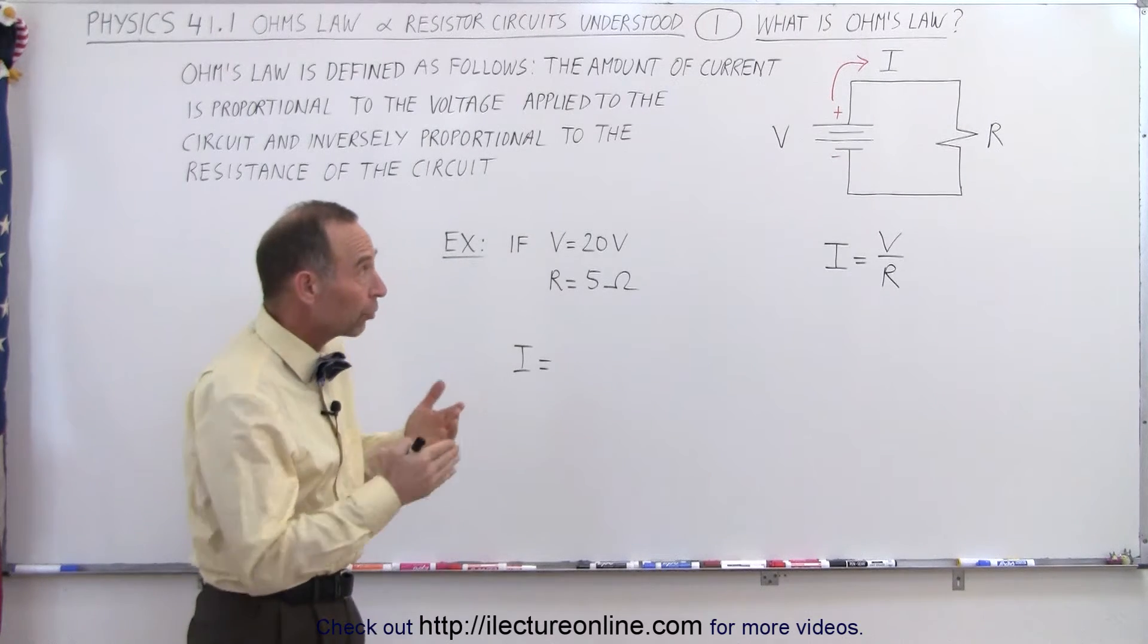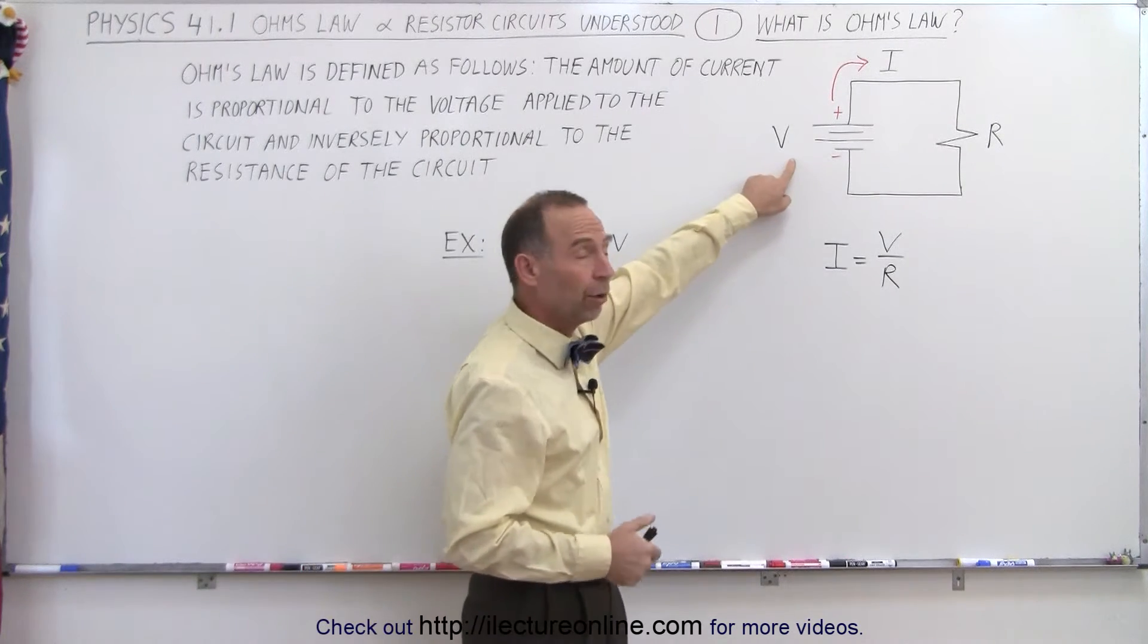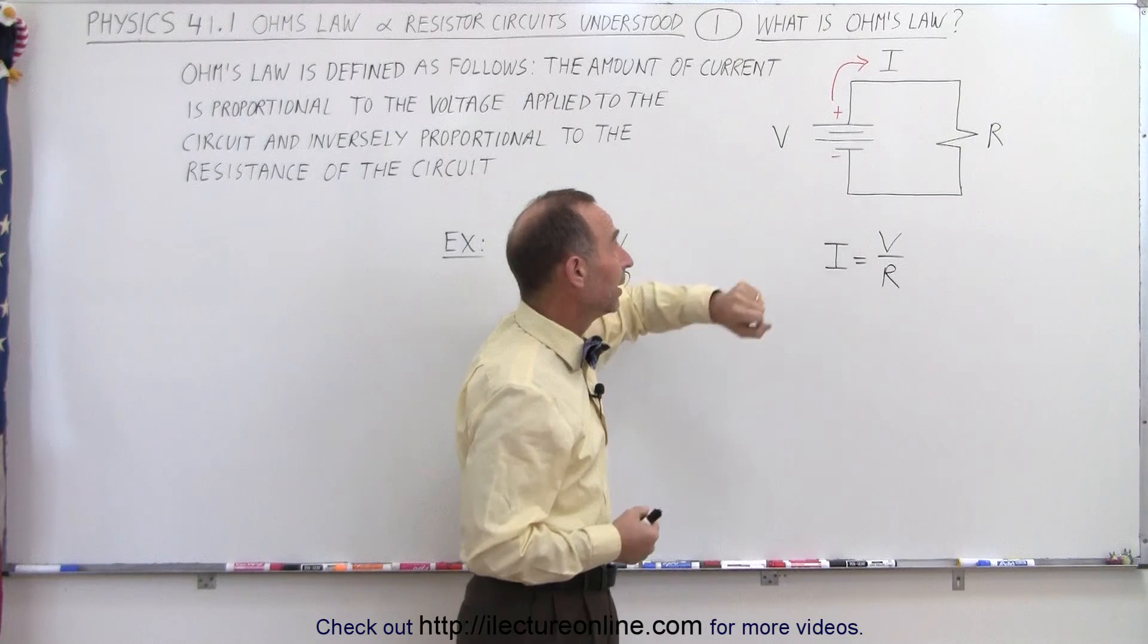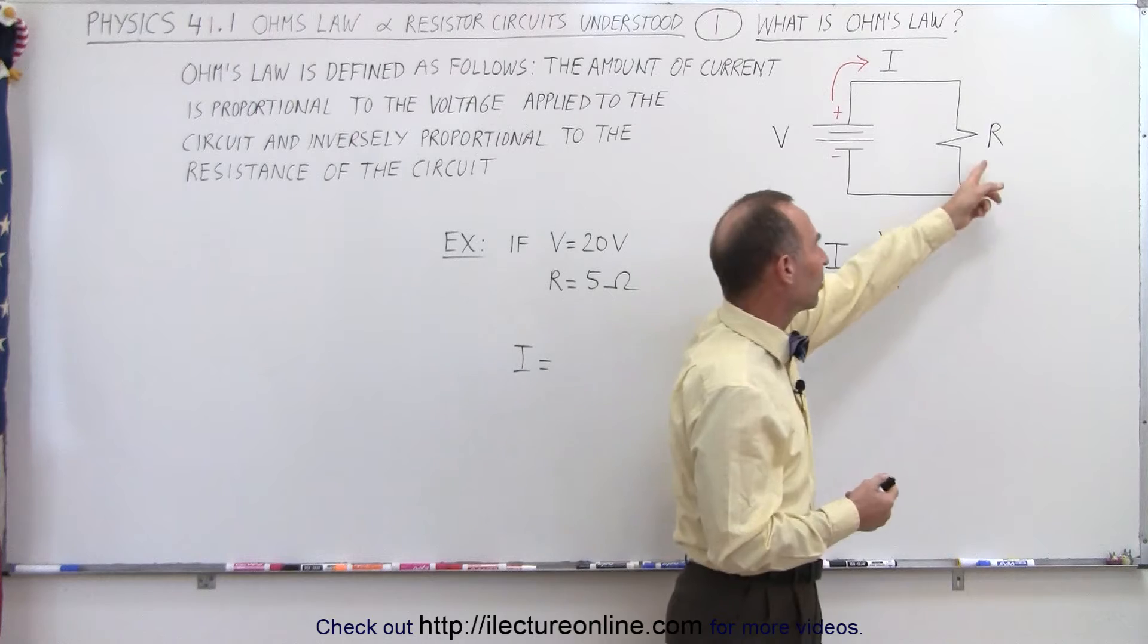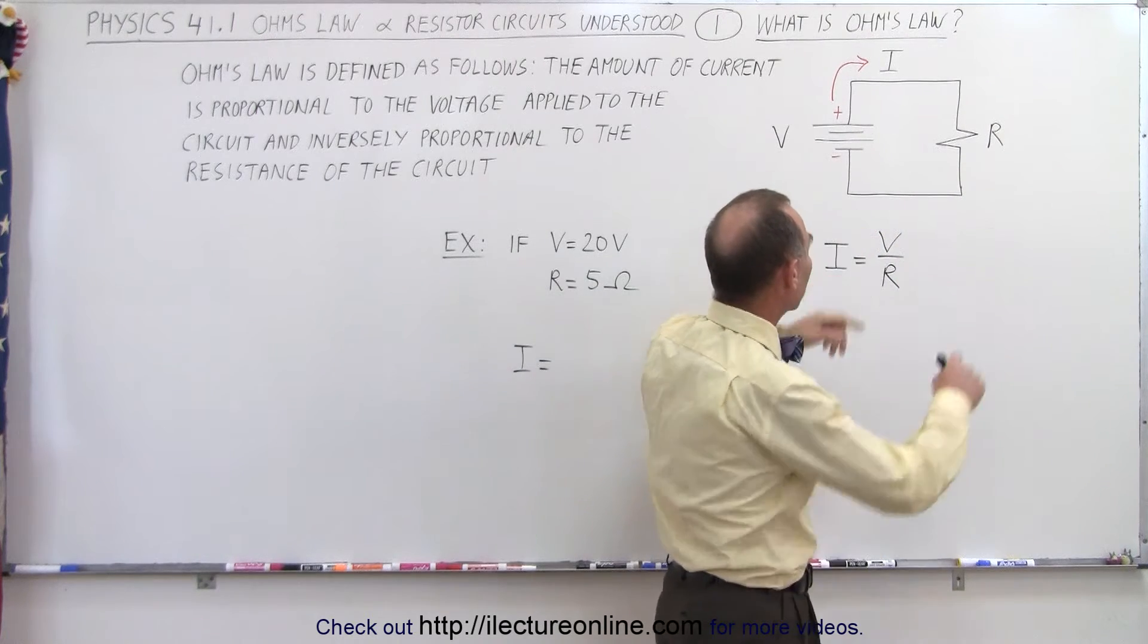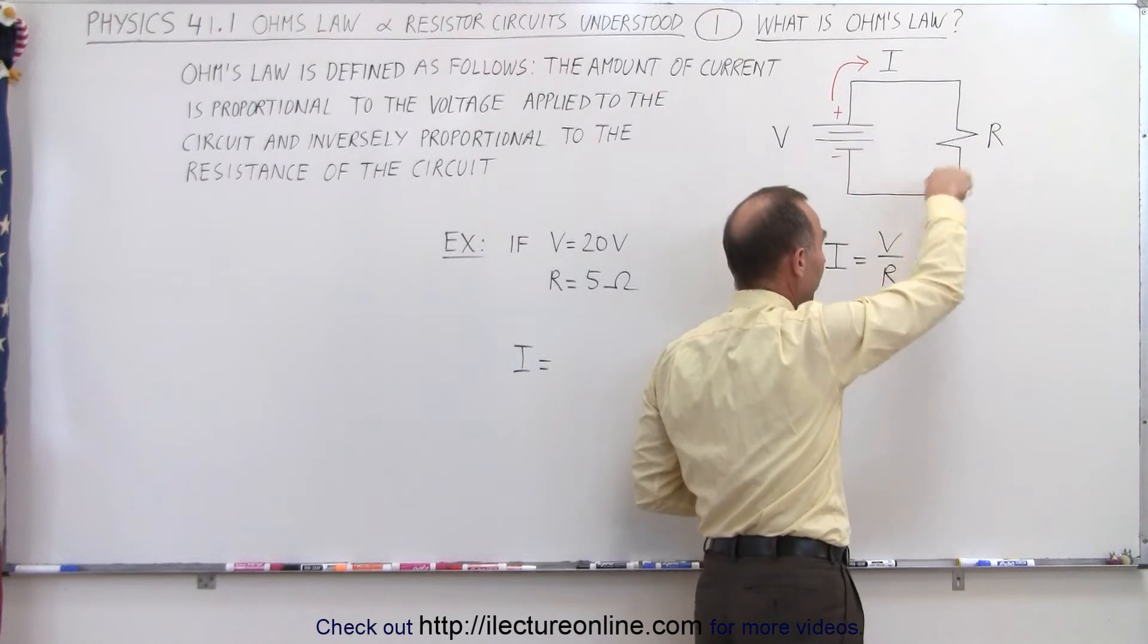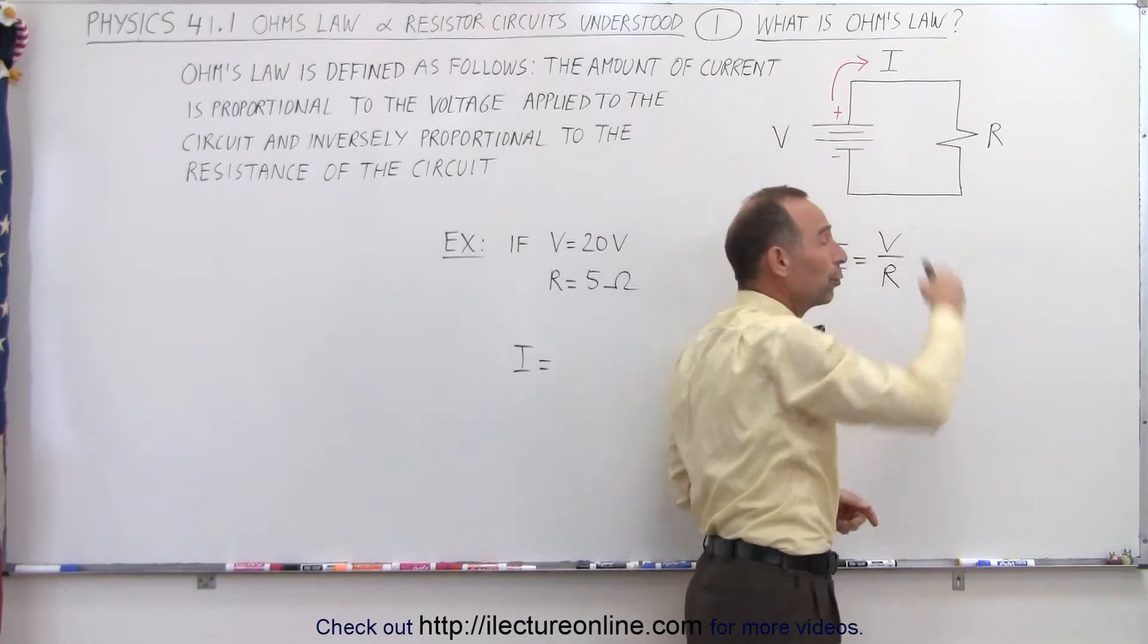In its simplest term, a circuit will contain a voltage source, such as a battery. It will contain some sort of resistance, which can be represented by a single resistor. And when we connect it as a complete circuit, a complete loop, a current will flow through the circuit.